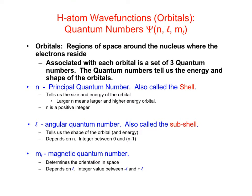The value of L depends on N — once we specify N, that determines the possible values of L. For example, if N is equal to 4, the possible values of L must be integers between 0 and N minus 1, which is 3, so L can be anything between 0 and 3. M sub L, the magnetic quantum number, tells us about the orientation of the orbital in space. Its values depend on L. For example, if N equals 4 and L equals 1, the possible values of M sub L would be negative 1, 0, or positive 1.